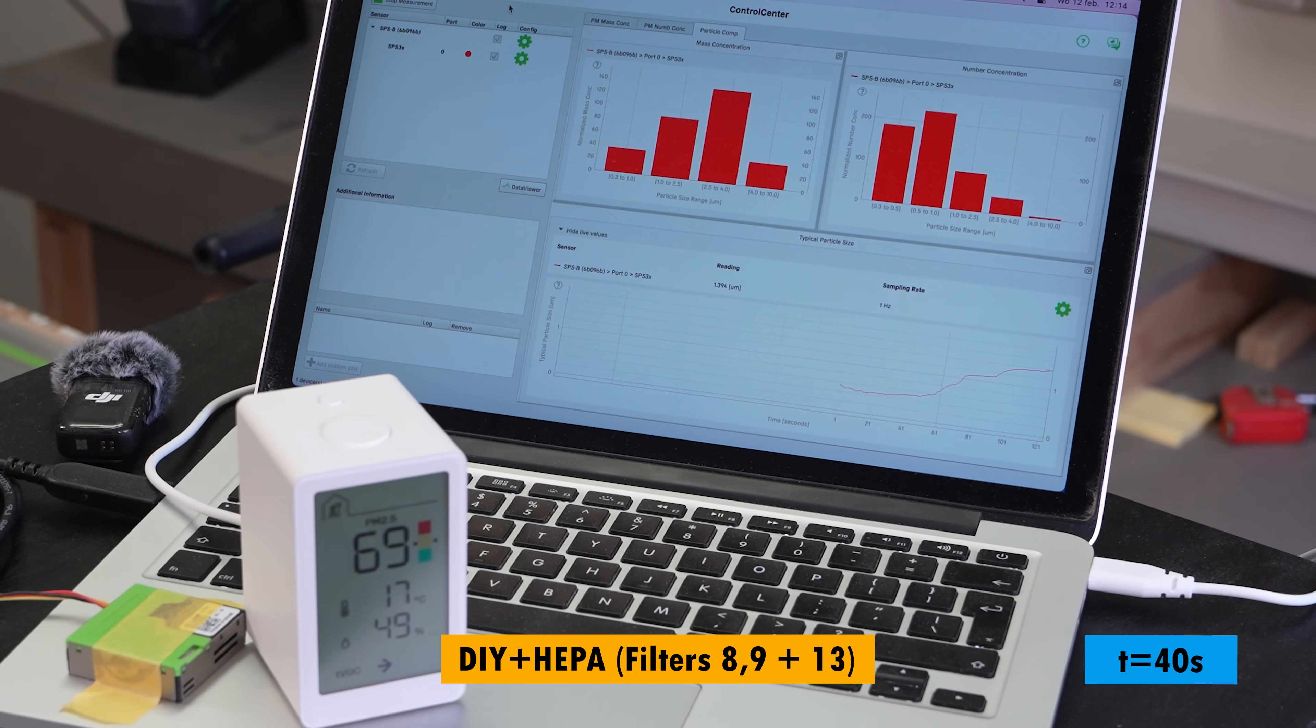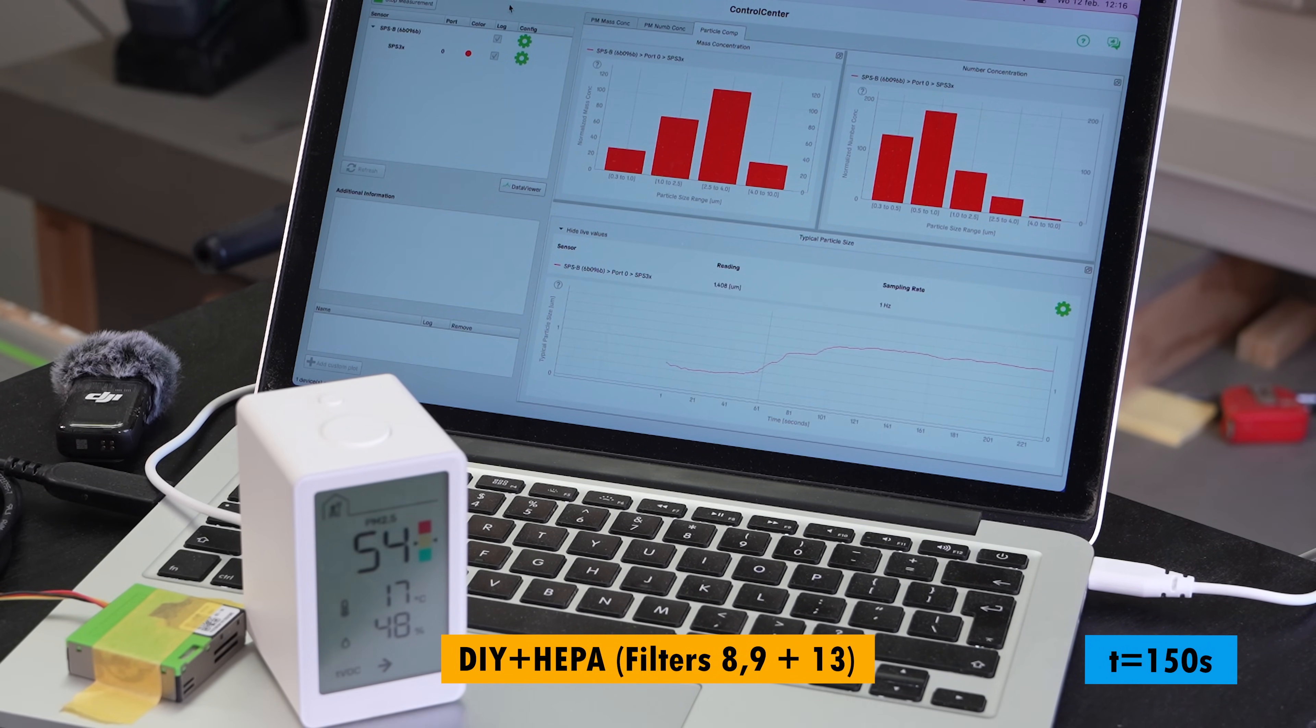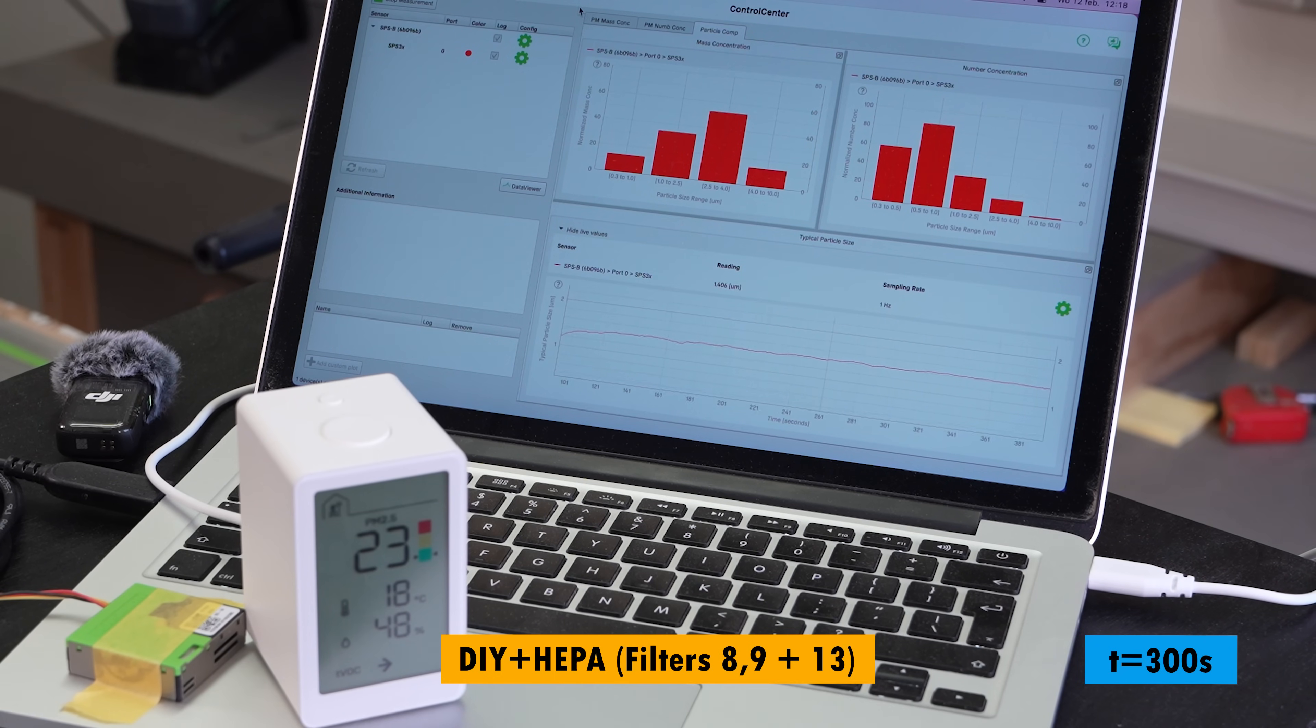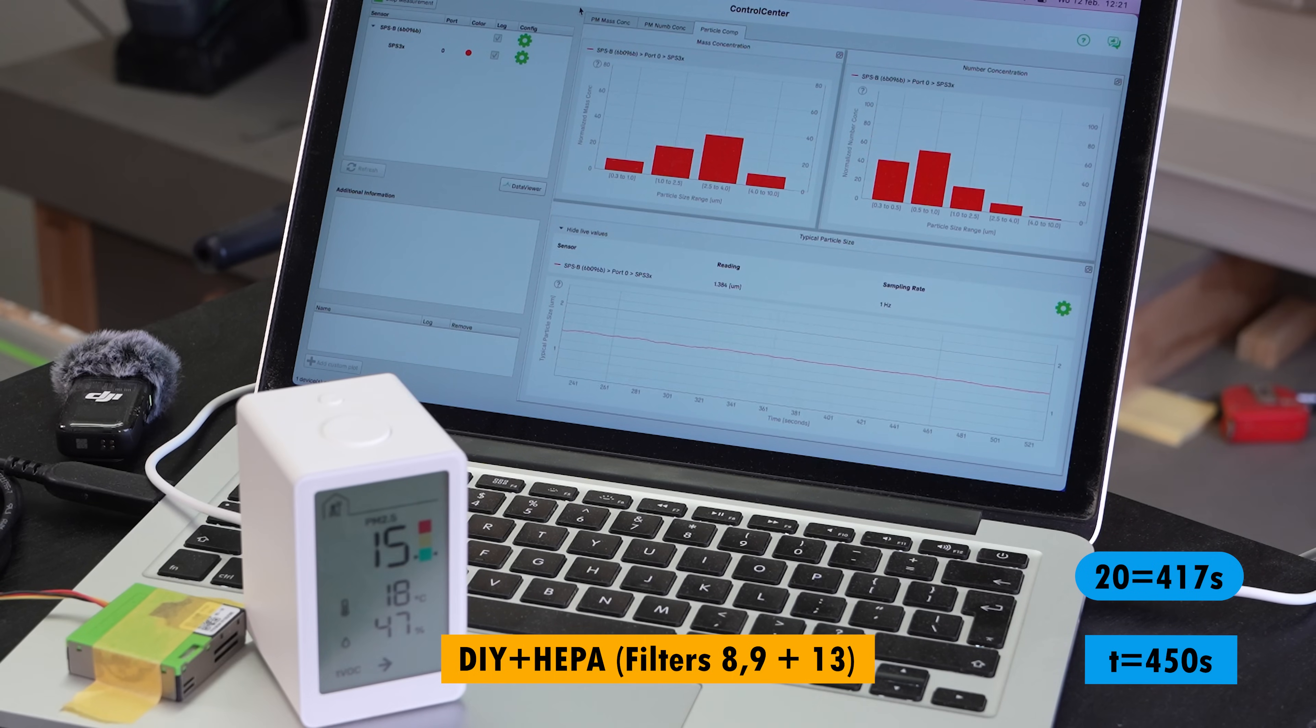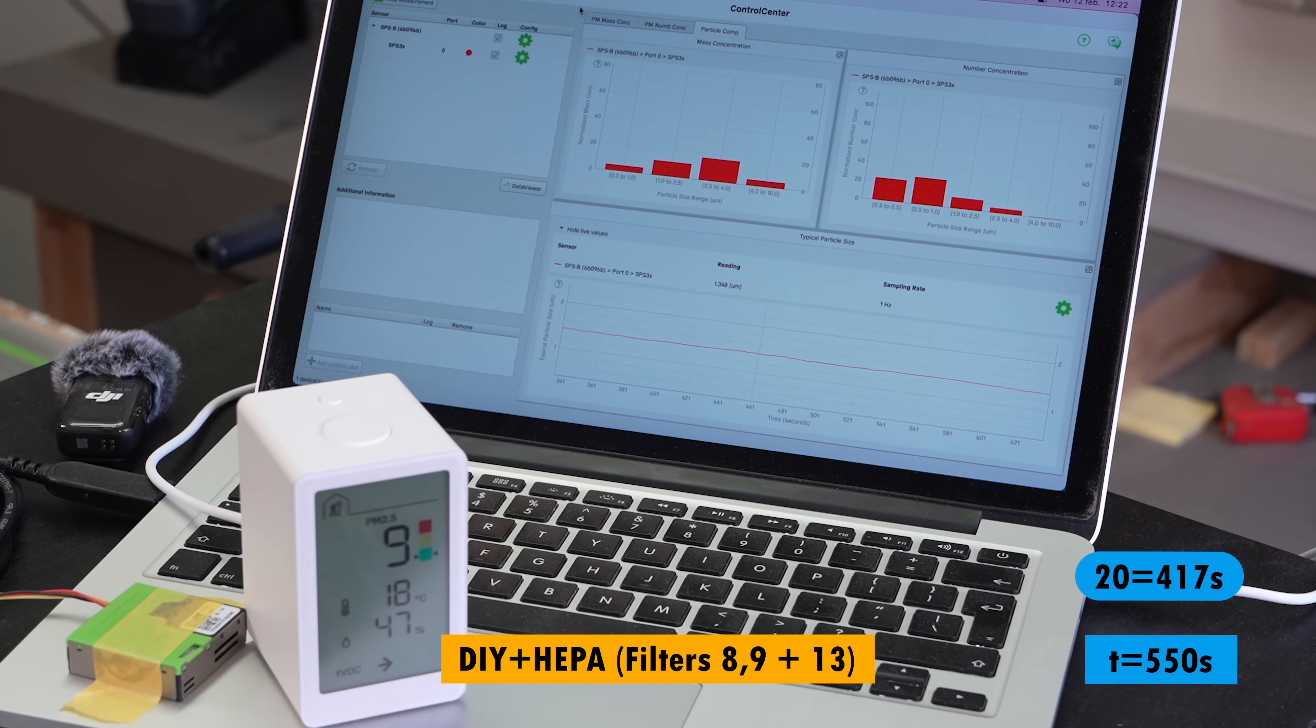First I want to see how my HEPA DIY build will tackle the airborne dust particles. The filter was turned on before making the cuts. And I started the time right after the last cut. The 2.5 rating on the IKEA sensor almost went into the red area. And it needed 7 minutes to come down to a rating of 20 and 10 minutes to reach the starting goal of 7.